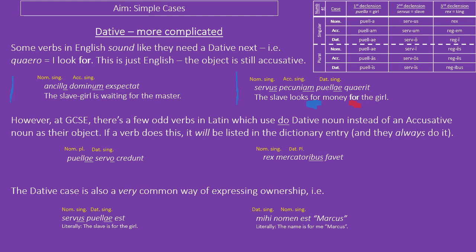On the other hand, we also have instances where Latin does need a dative and English doesn't. For example, the word credo — 'I trust.' In English you say 'I trust him,' expecting him to be accusative. Whereas in Latin it's almost like saying 'I give trust to him' — not quite that, but a similar idea. So: 'puellae credunt servo' — the girls trust the slave — servo there is dative, but you don't need to say 'the girls trust to the slave.' It doesn't sound right in English — just translate it as if it were accusative. Another example: faveo — 'I favour.' Perhaps the original meaning was 'I give my favour to someone.' Regardless, nowadays you'd just translate it as 'the king favours the merchants.'